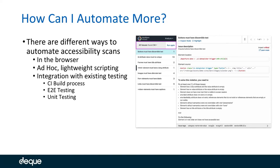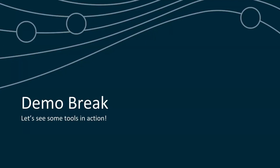You can make accessibility testing part of your end-to-end testing, regression testing, and unit testing so that it's completely automated, giving you all the good test data to understand what's wrong, where it's wrong, and how to fix it — as part of an automated process that already exists for the rest of your front-end testing needs. It's not an extra step; it's just part of business as usual testing.